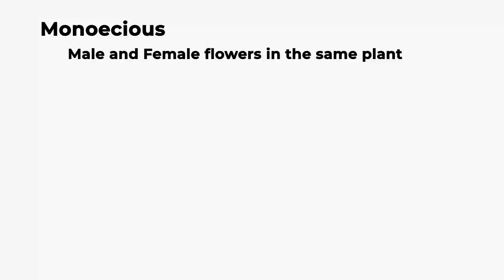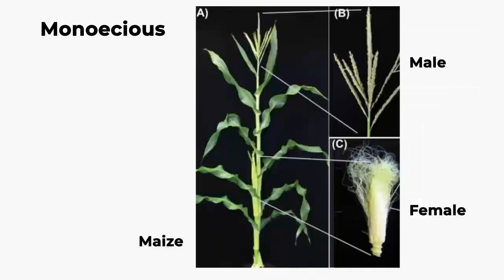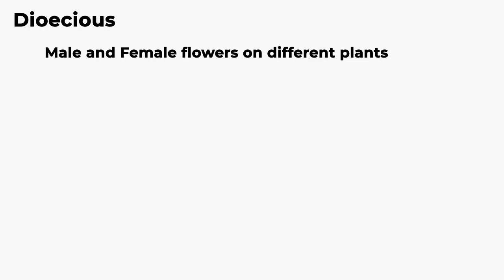If male and female flowers are seen in the same plant, it is called monoecious — examples: coconut, bitter gourd, castor, and maize. In castor and maize, geitonogamy takes place, meaning pollination occurs in the same plant but from different flowers. There is no chance of getting pollen from the same flower because of the location of their sex organs.